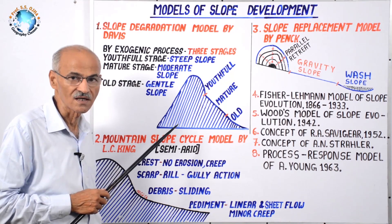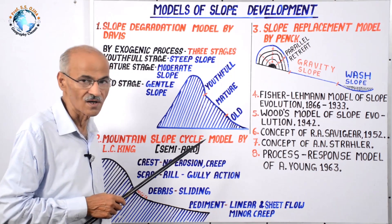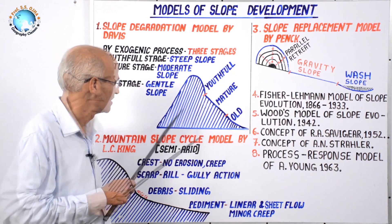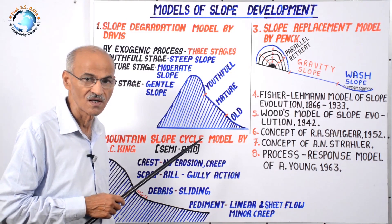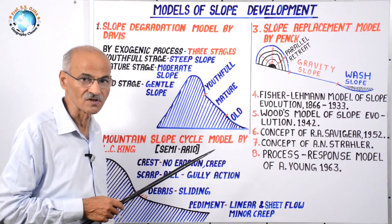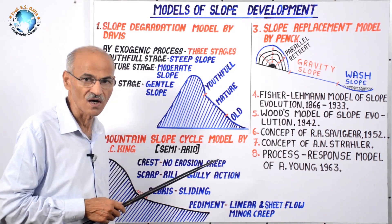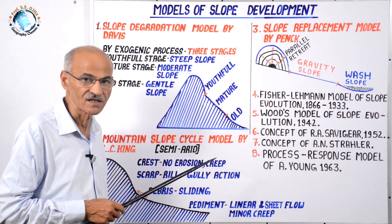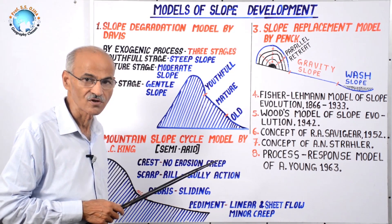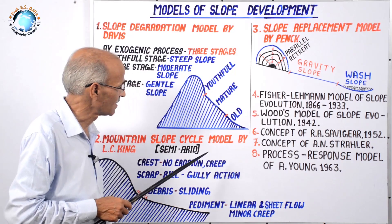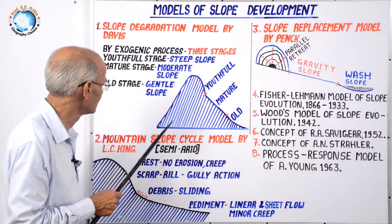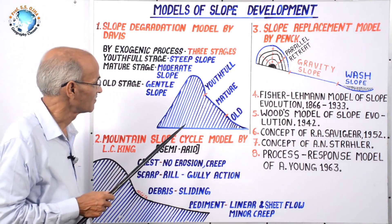In the third or old stage, Davis proposed that a gentle slope develops because the highest points are reduced considerably and rivers stop deepening. Relative relief is minimum and a peneplain develops, where 50 percent of the upper part is erosional and 50 percent of the lower part is depositional. The interfluves are reduced to monadnocks with very gentle slope.